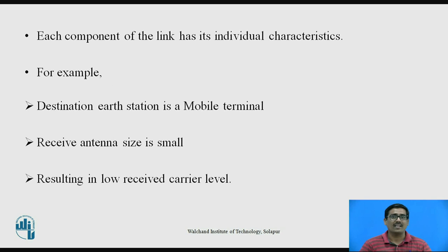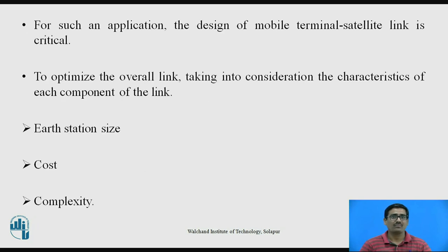Each component of the link has its individual characteristics. For example, if we suppose I want to transmit data for mobile-to-mobile communication, then the destination station is a mobile terminal. The receiver antenna size is also small, resulting in a low receiver carrier level and low frequency requirement. If the antenna size is small, then the frequency requirement is also very small. For such an application, the design of the mobile terminal satellite link is critical, to optimize the overall link taking into consideration the characteristics of each component — the Earth station size, cost, and complexity.